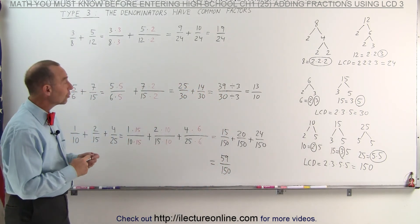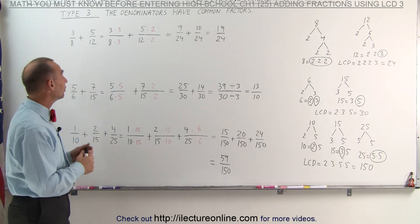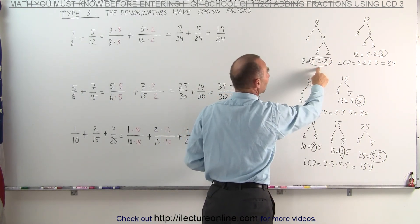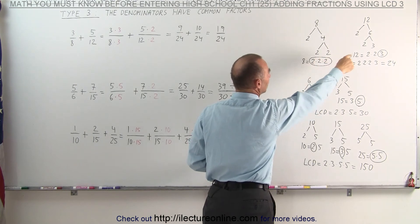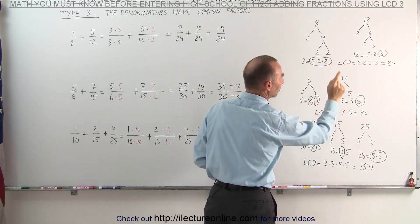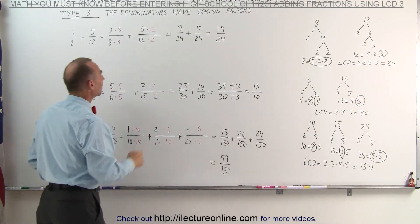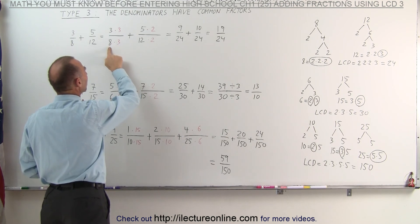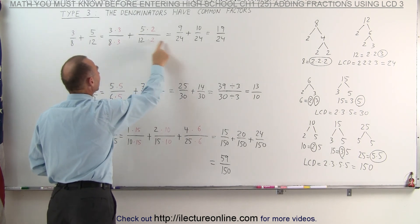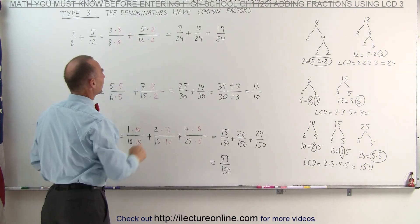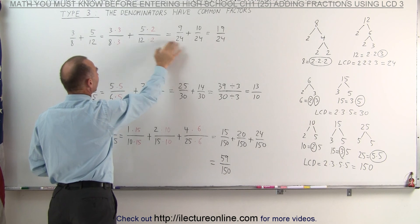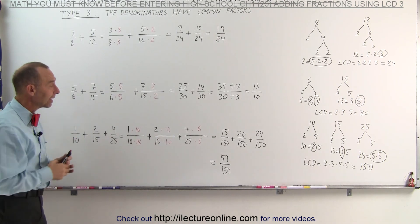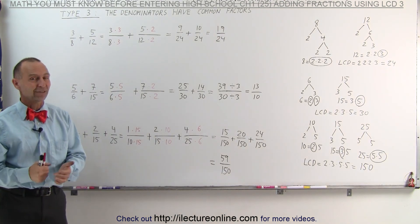That's the technique we use to add fractions whose denominators have common factors. First, factor each denominator to write it as a product of its prime factors. Then circle the factors which occur the most and multiply those together — those become the lowest common denominator. Then rewrite each fraction, determine what number to multiply the denominator by to reach the LCD, and multiply the numerator by that exact same number. That's how you add fractions with different denominators.